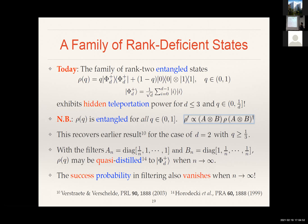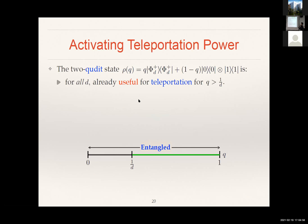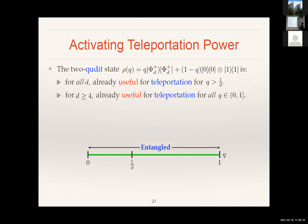What did we find for this state? For all d, the state is already useful for teleportation whenever q is larger than 1/d. This is easy to see because the fully entangled fraction is just a maximization over the overlap with respect to maximally entangled states, and since the maximally entangled term is orthogonal to the product state term, the overlap already gives a fully entangled fraction of at least q. So if q is larger than 1/d, we're done. For d larger than or equal to 4, the state is useful for the entire interval. For the qutrit and qubit cases, it is useful if and only if q is larger than 1/d.